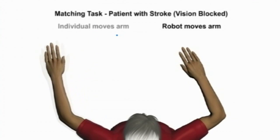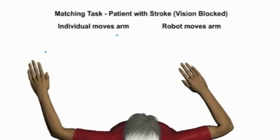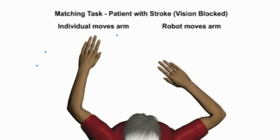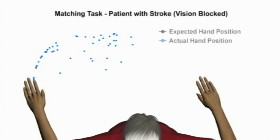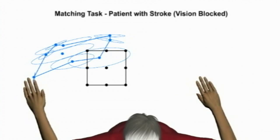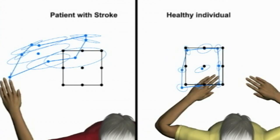In this example, we have a patient with a stroke performing the same matching task. Again, the robot moves the right arm, but this time the patient is unable to accurately match the mirror position of their right arm. As the ellipses show, there is a large degree of variability across repeated trials in where the patient thinks their right arm is positioned. The data produced enables researchers and clinicians to score the amount of variability, the area of the workspace used, and any shift in the patient's workspace.